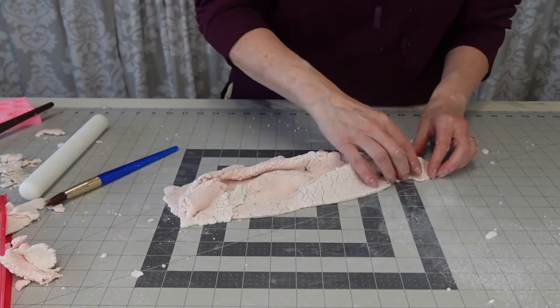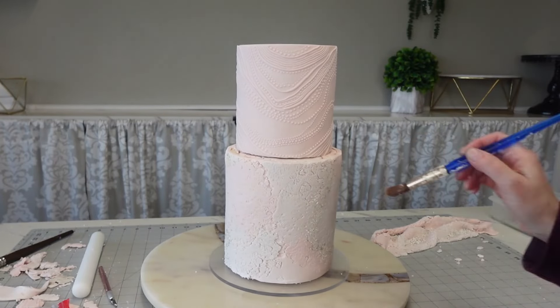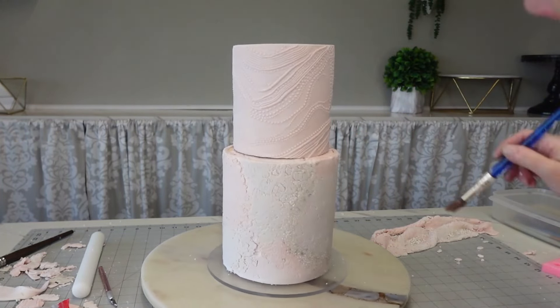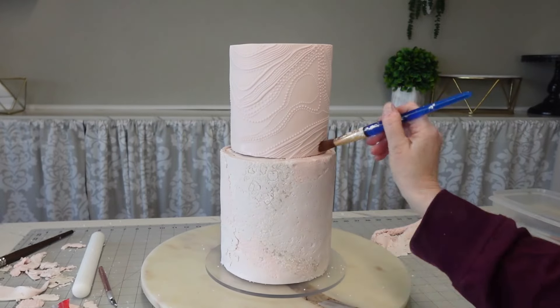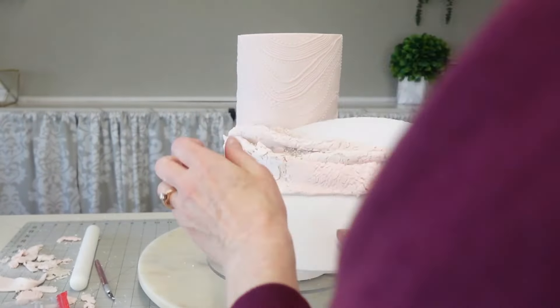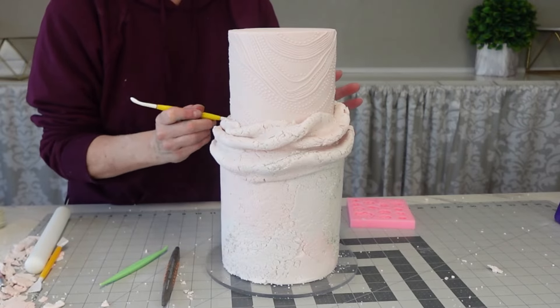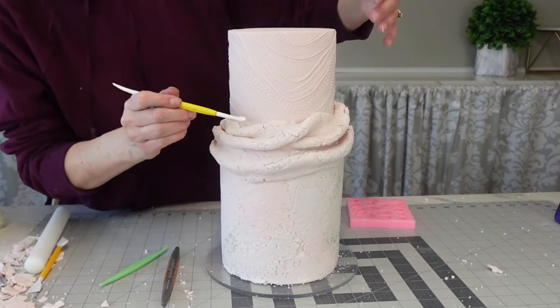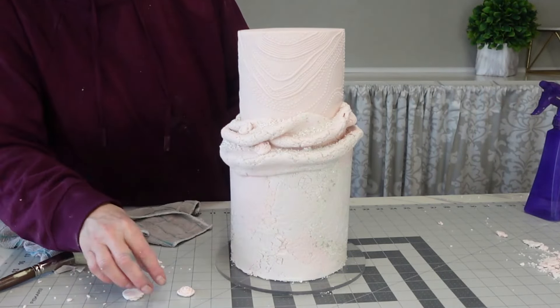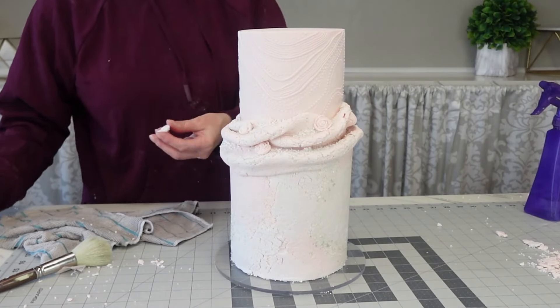And then just use your hands to just kind of push it together to create that ruching. It doesn't have to be a perfect ruche. This is natural, remember? I'm not trying to mimic fabric this time and attach it with just some water. I would not go with shortening on this technique because there's some weight to this fondant draped piece. And you just place it on there and then wrap it around to the back. Make sure that it's stuck on good. And then I'm using my Dresden tool to just kind of reaffirm or just kind of redefine it and tuck any of those rough edges in.